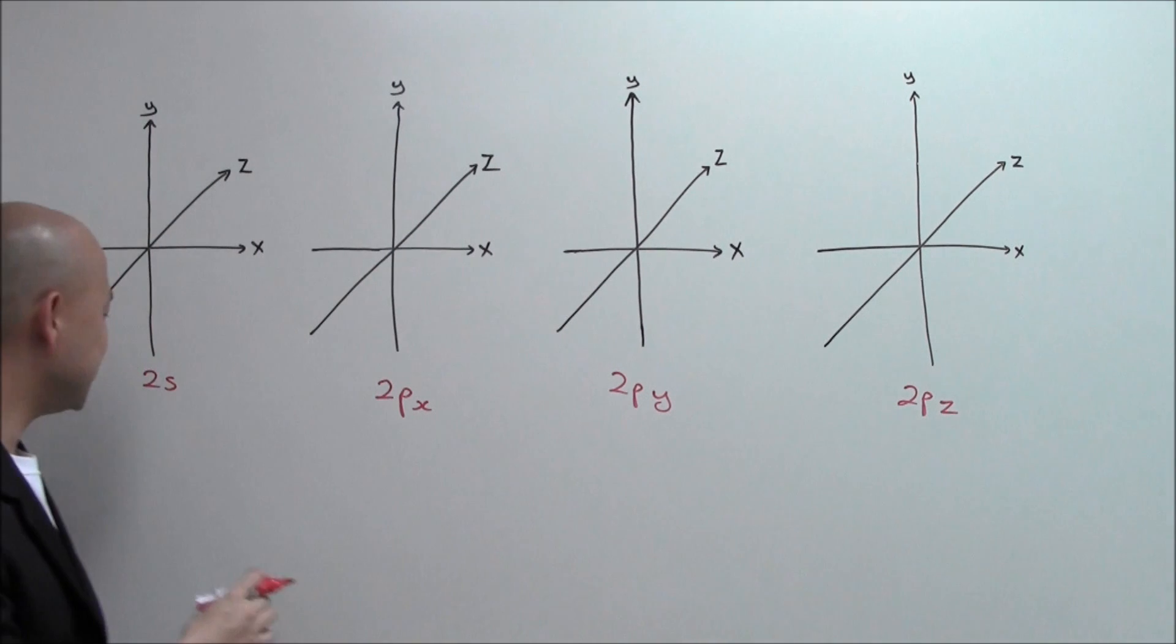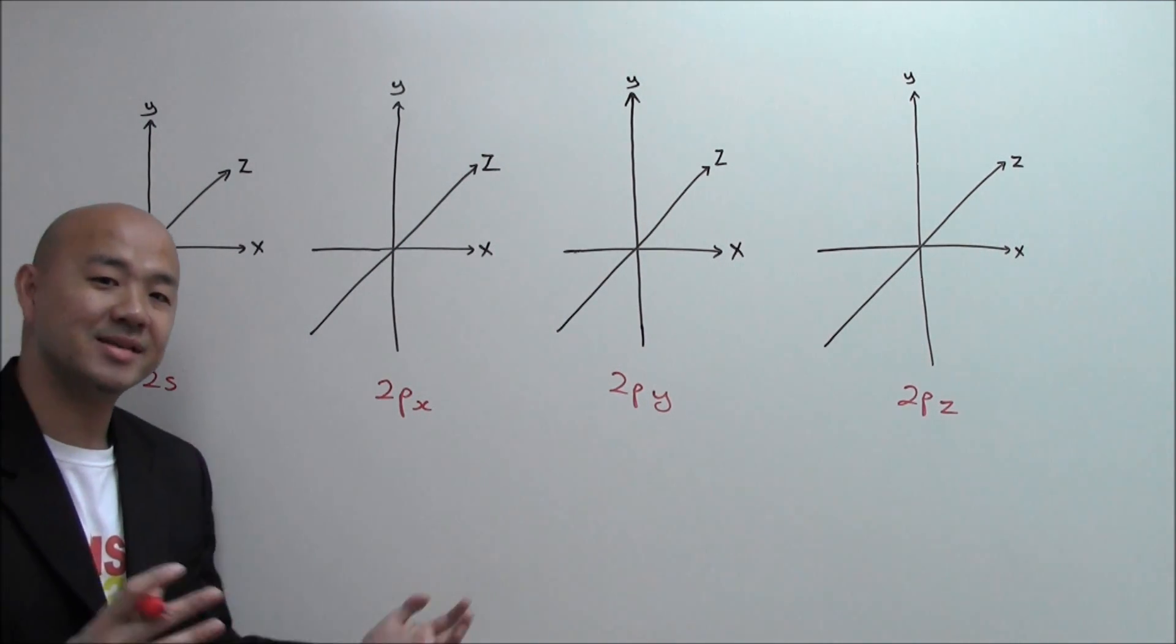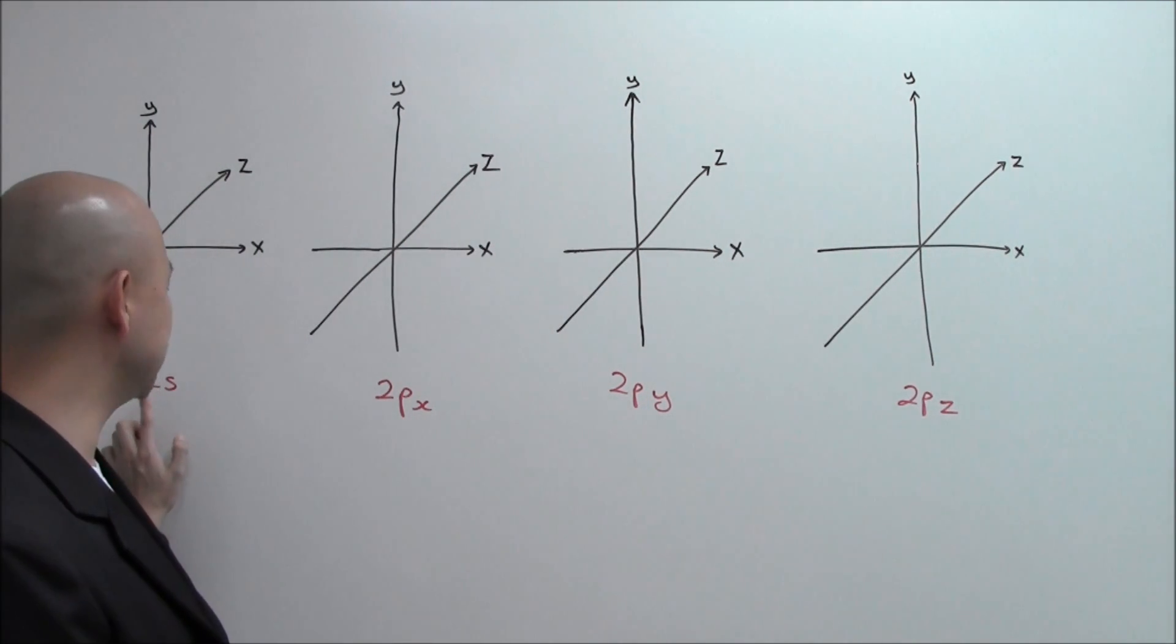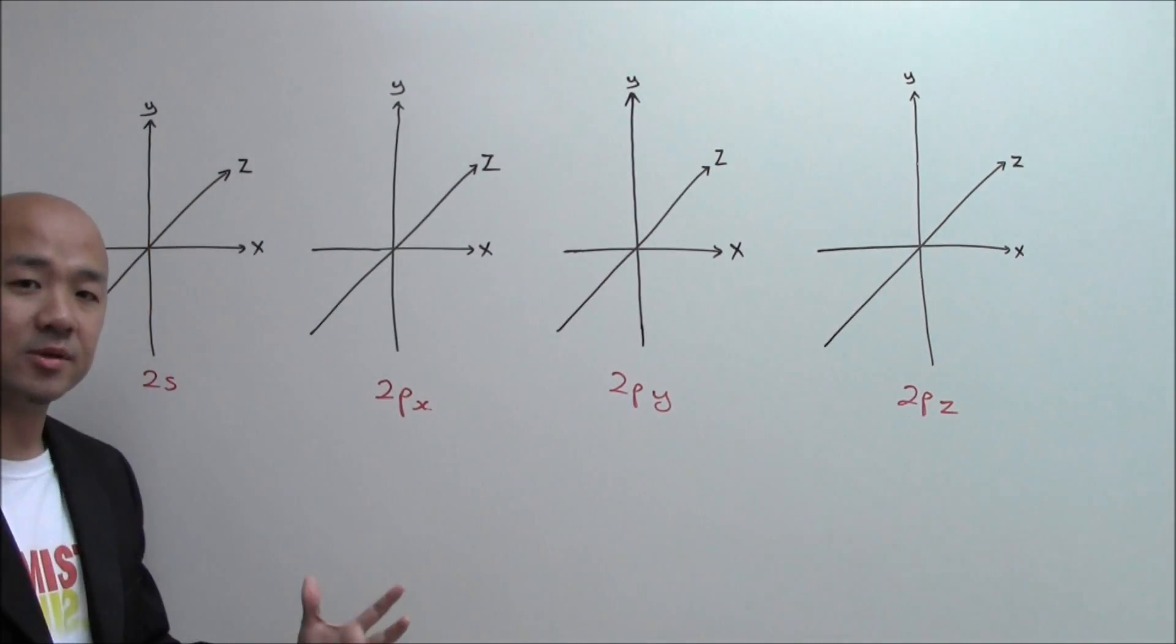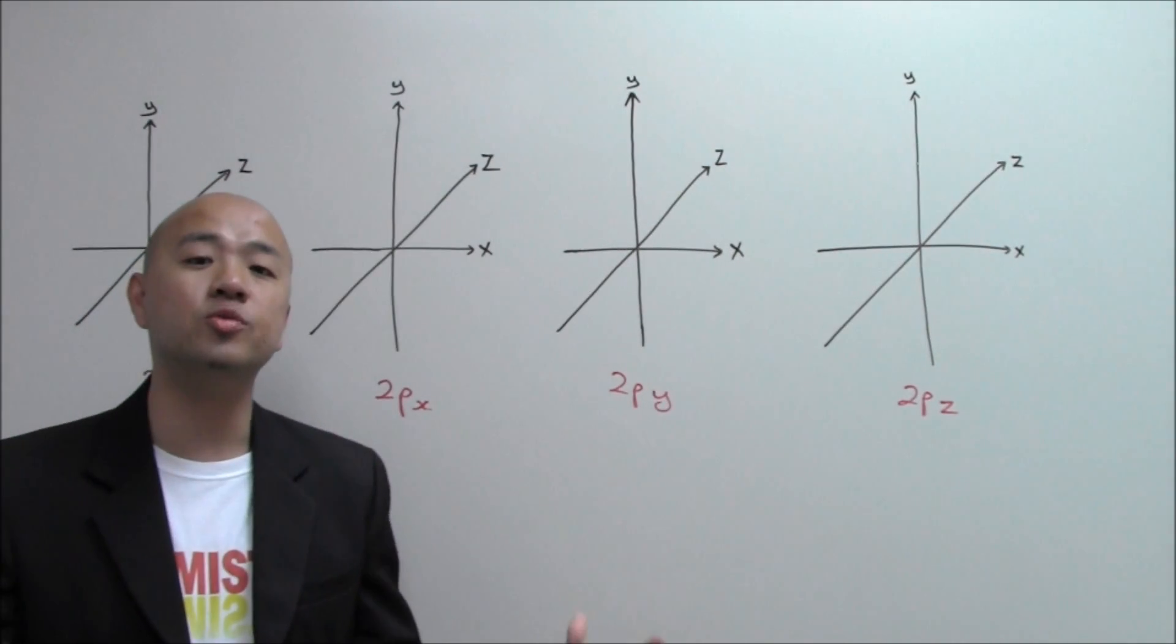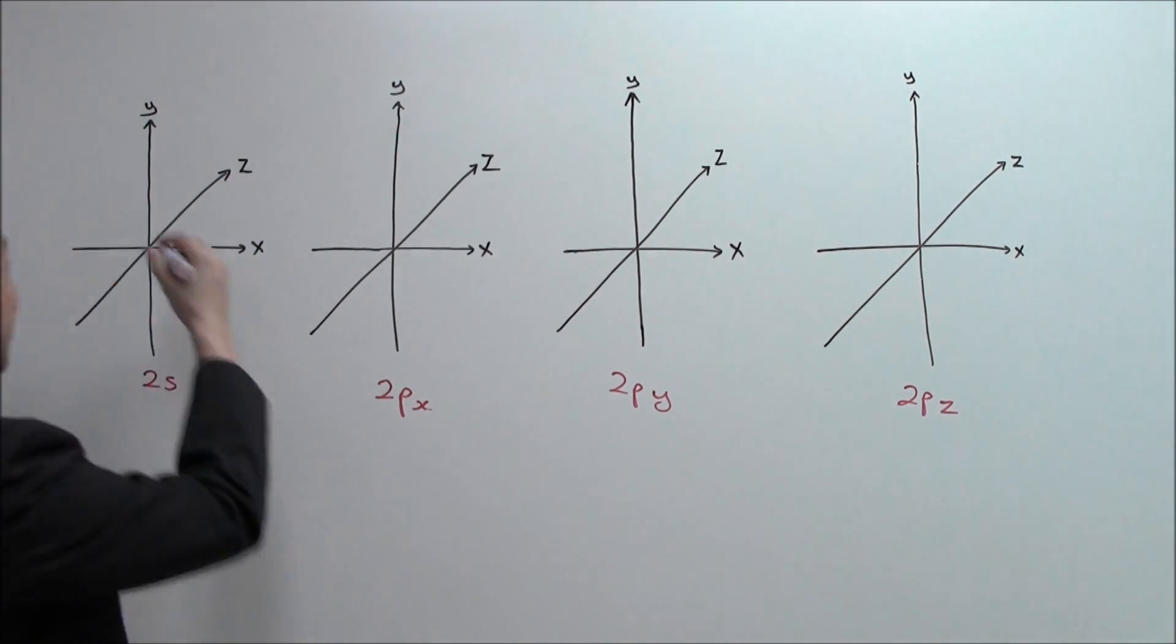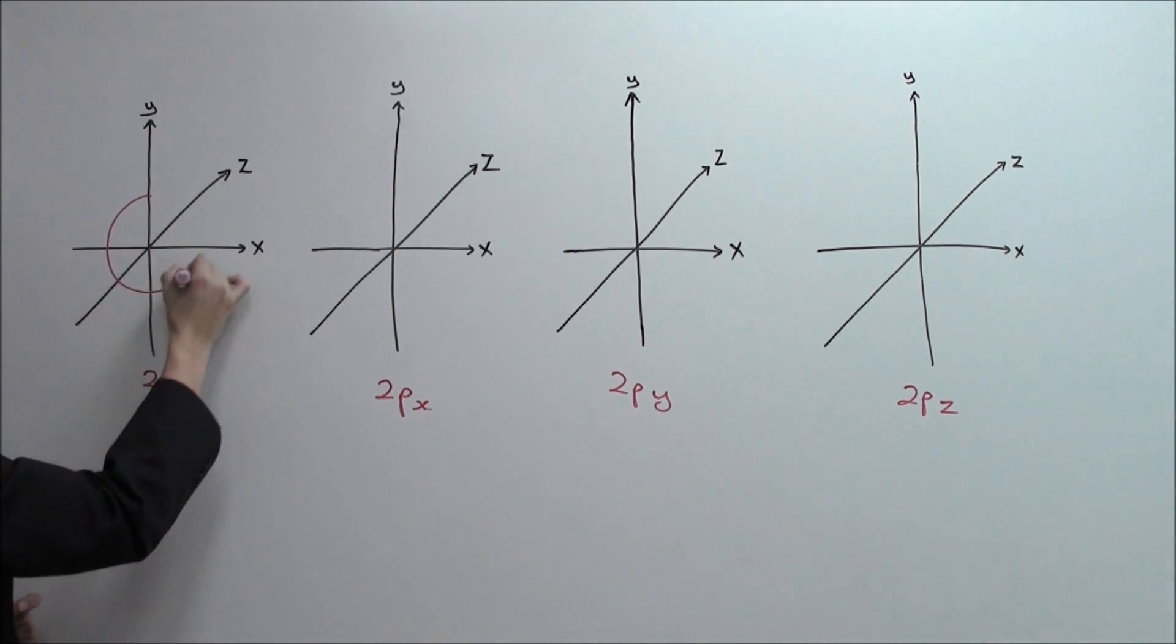Now let's use principal quantum shell number two as an example. So we have orbitals 2S and 2P orbitals. 2S orbitals, or rather the S orbitals, is known to be spherical, so they are like a circle. You draw them like this.